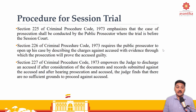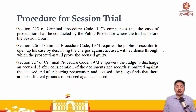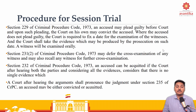Moving further to procedure for session trial. Session trial is mentioned under section 225 of CRPC, which says that the case of prosecution shall be conducted by a public prosecutor where the trial is before the session court. Moving further to section 226, it requires the public prosecutor to open up his case by describing the charges against the accused with evidence through which the prosecution will prove the accused guilty. Next is section 227, which empowers the judge to discharge an accused if, after consideration of the documents and records submitted and after hearing prosecution and accused, the judge finds that there are no sufficient grounds to proceed against the accused. In this case, there is an acquittal for the accused if there are no grounds for conviction.